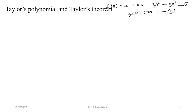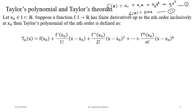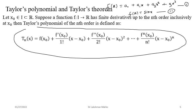Once we have Taylor's polynomial, we can discuss Taylor's theorem. Taylor's theorem is different from Taylor's polynomial: the polynomial was just about how to construct it for a smooth function. Taylor's theorem is stated as follows: suppose a function is defined from interval I to ℝ, x₀ is a member of this interval, and f has finite derivatives up to nth order. Then we define the Taylor polynomial as discussed.